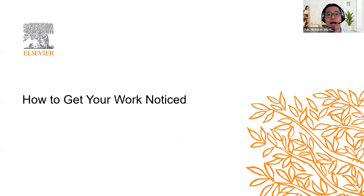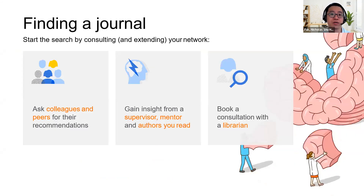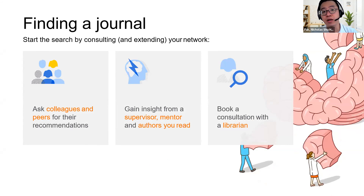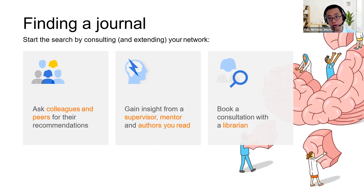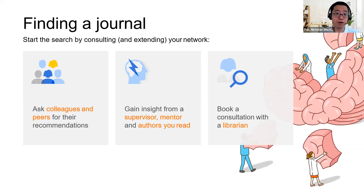What can you do to get your work noticed? One of the most key areas is that you need to publish your work in an optimal journal. Always ask your colleagues and peers for their recommendations. Sometimes you may be speaking to your supervisor or mentor, and when you're reading published authors, notice which journals they publish in and ask yourself if those are the platforms where you want to be published. Alternatively, book a consultation with the USM librarians — they are very good at what they do and will point you in the right direction.